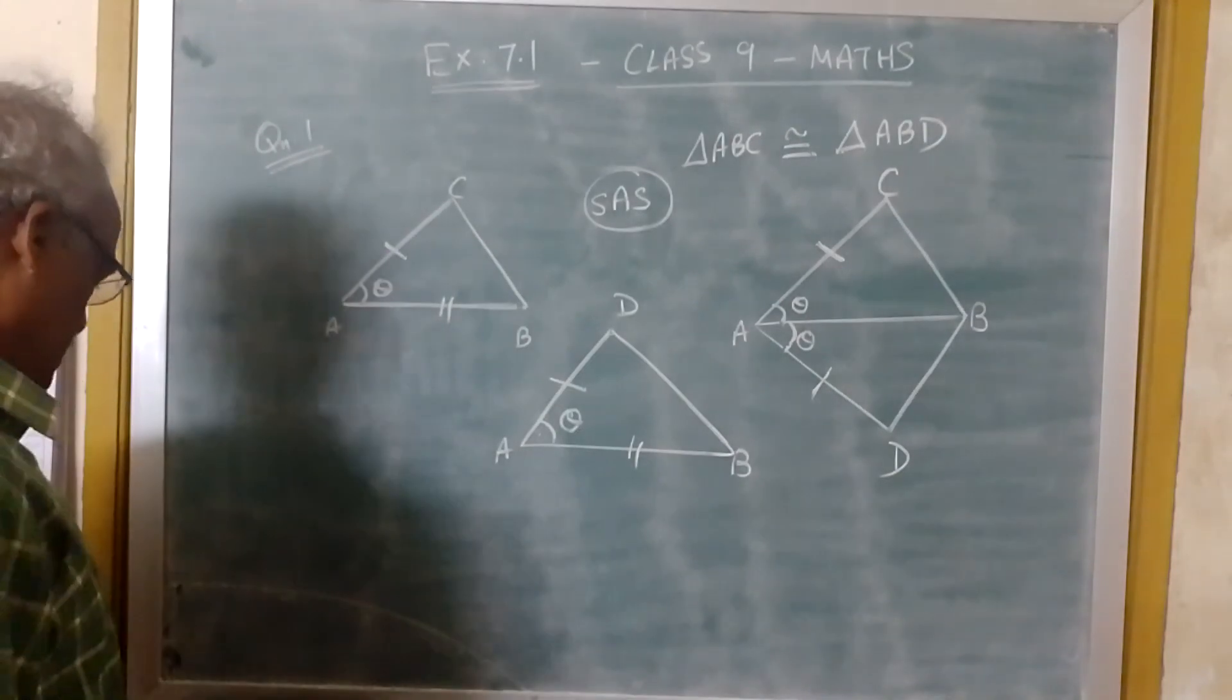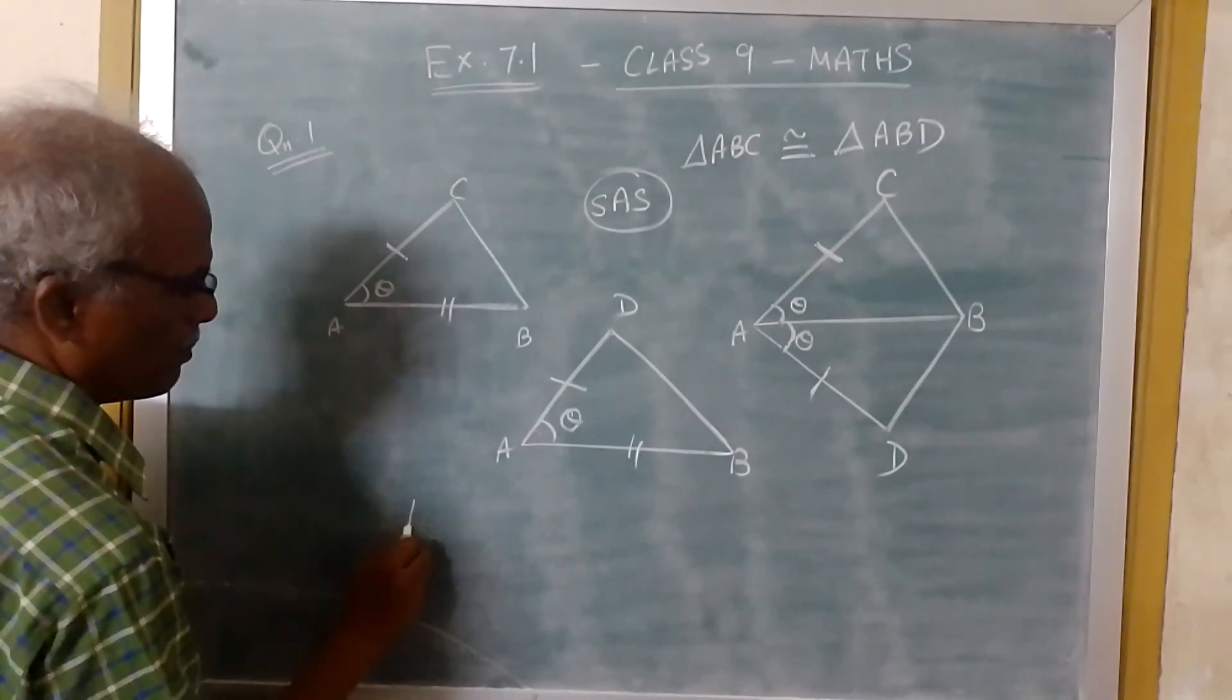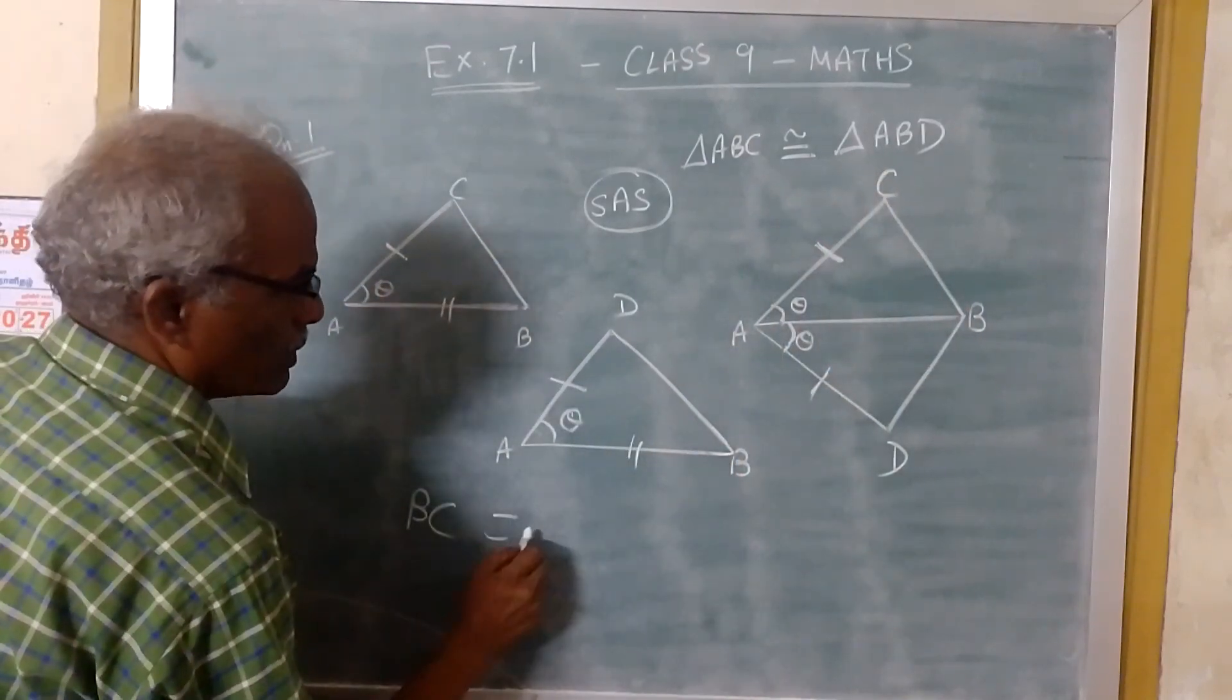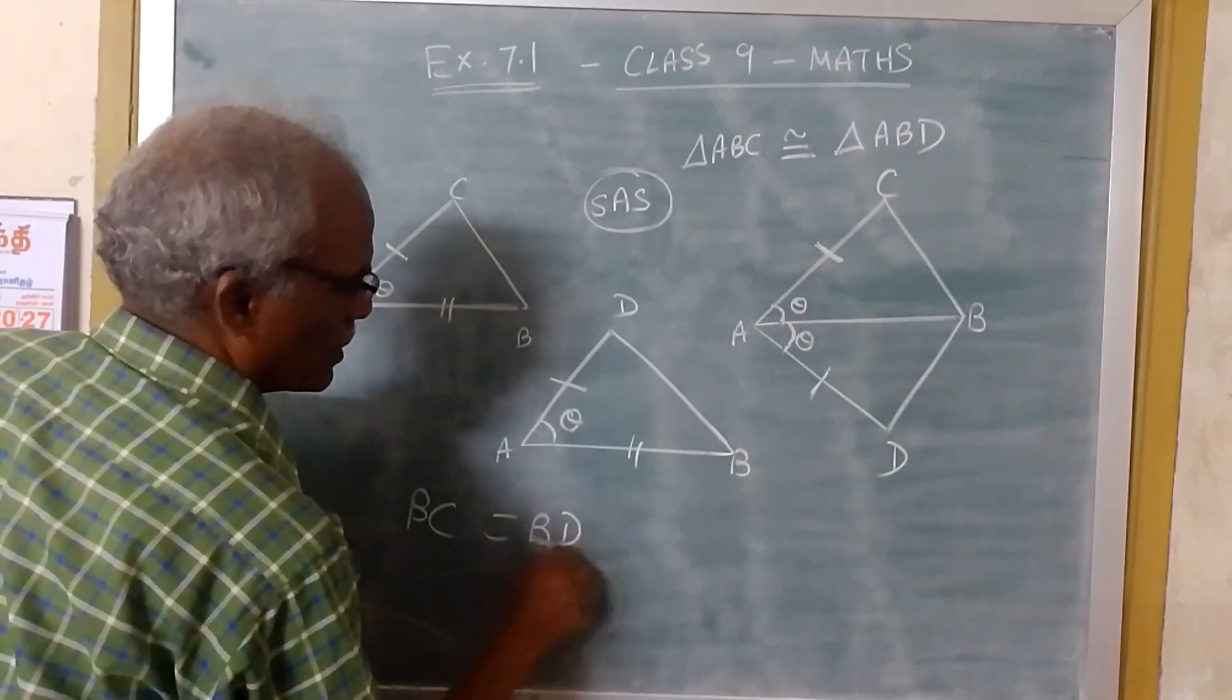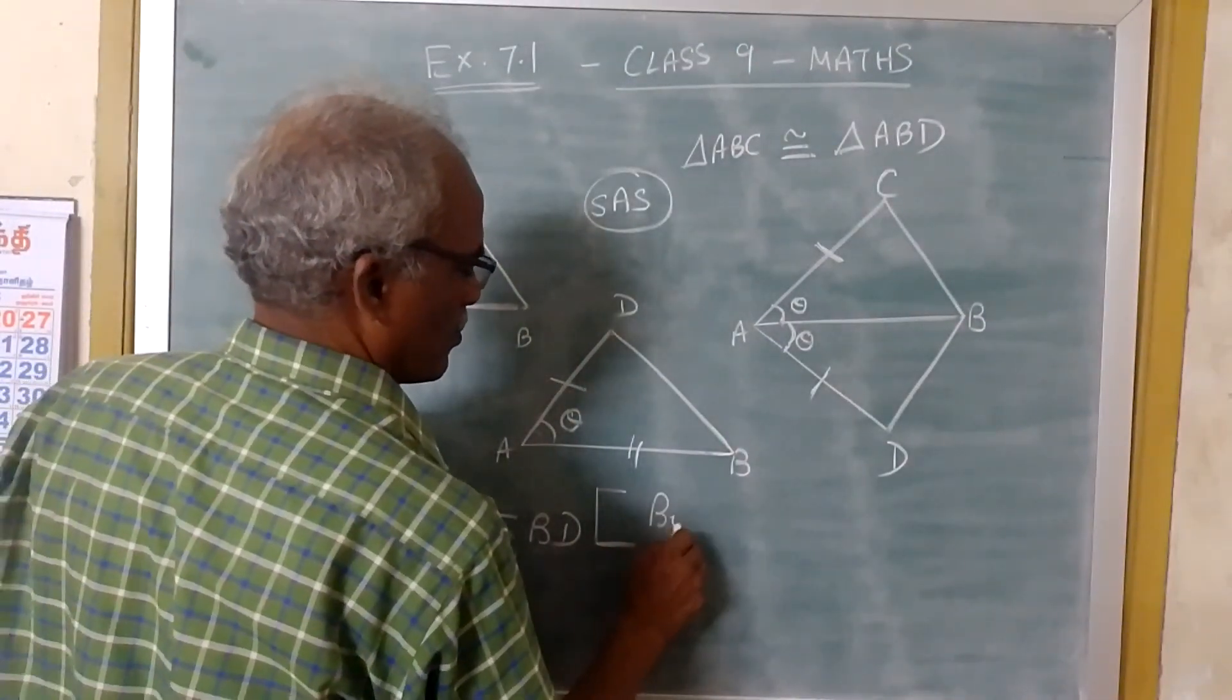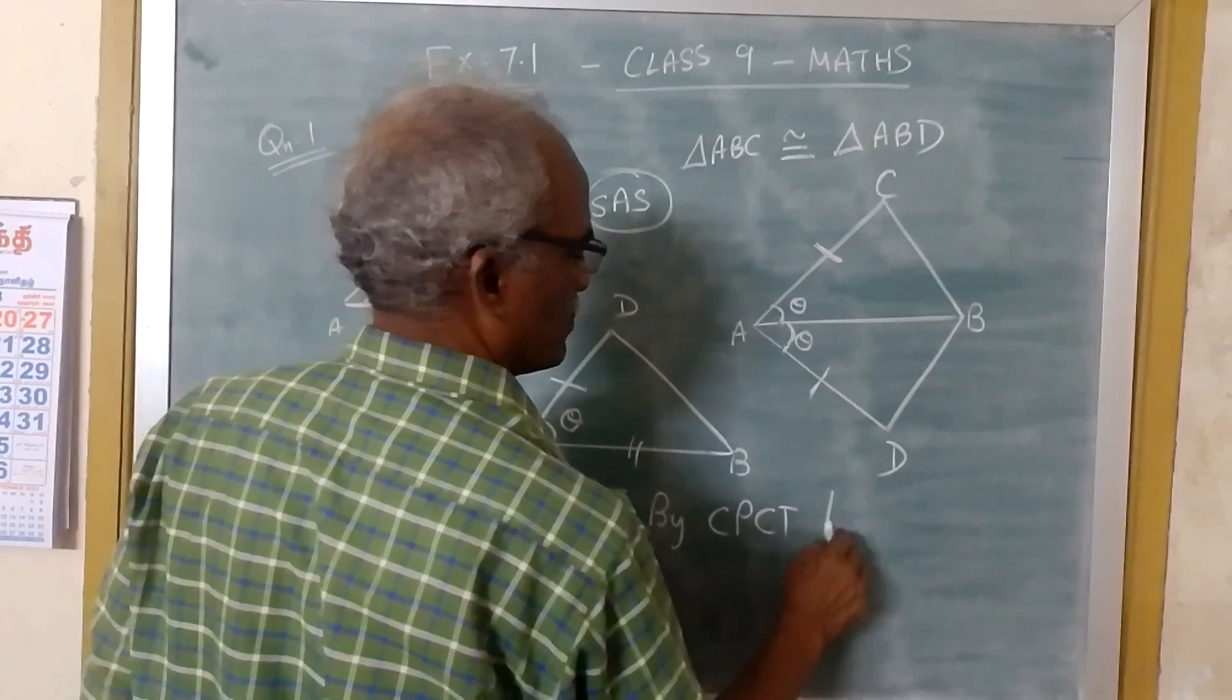So since this condition is verified, BC should be equal to BD. This is by CPCT theorem.